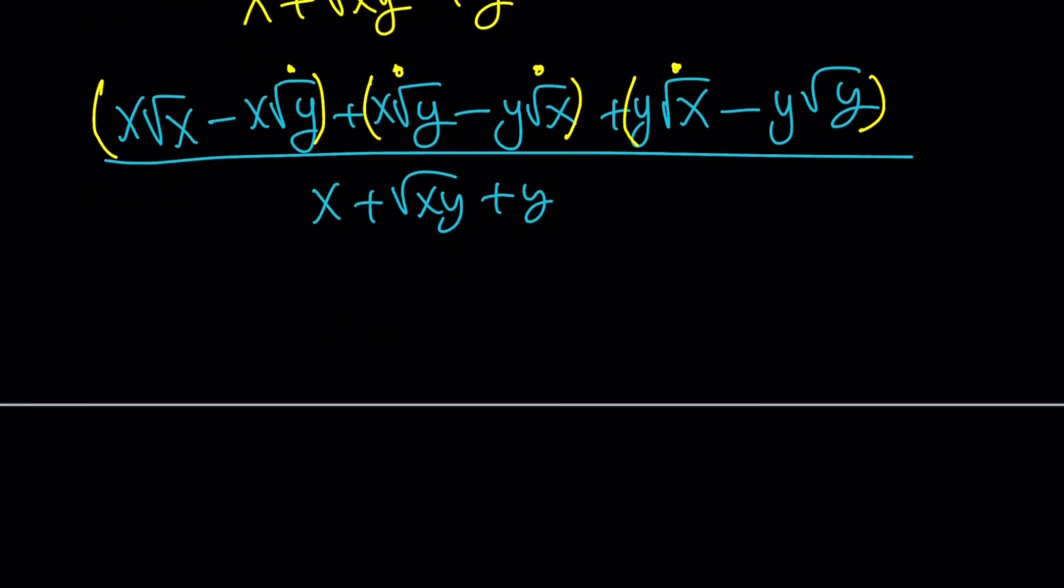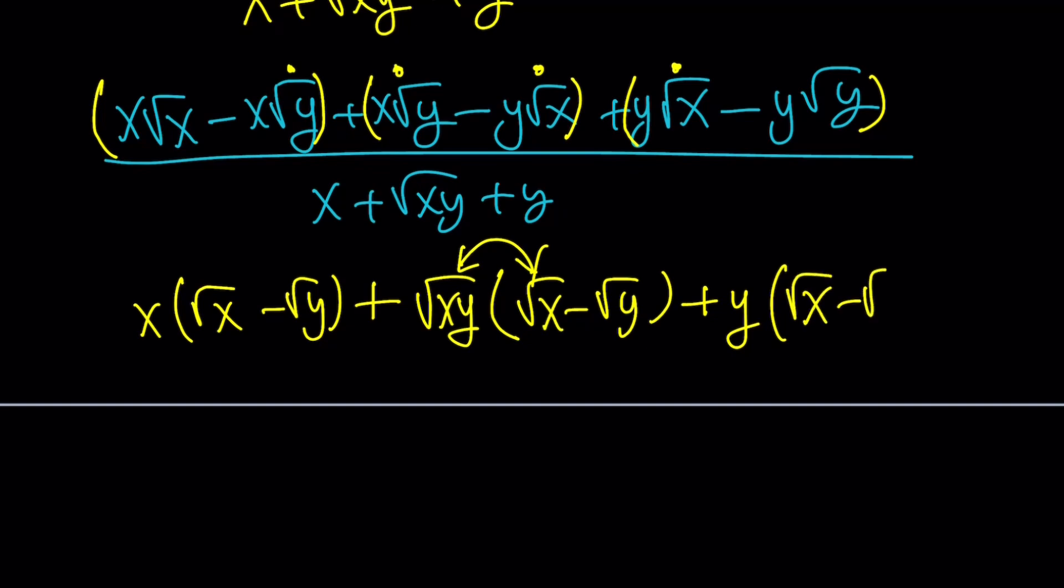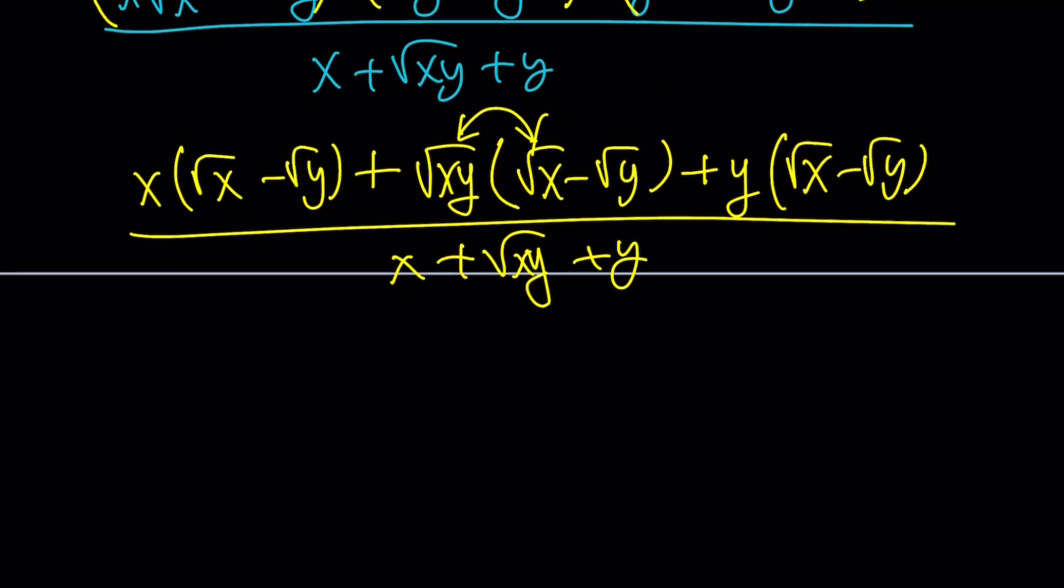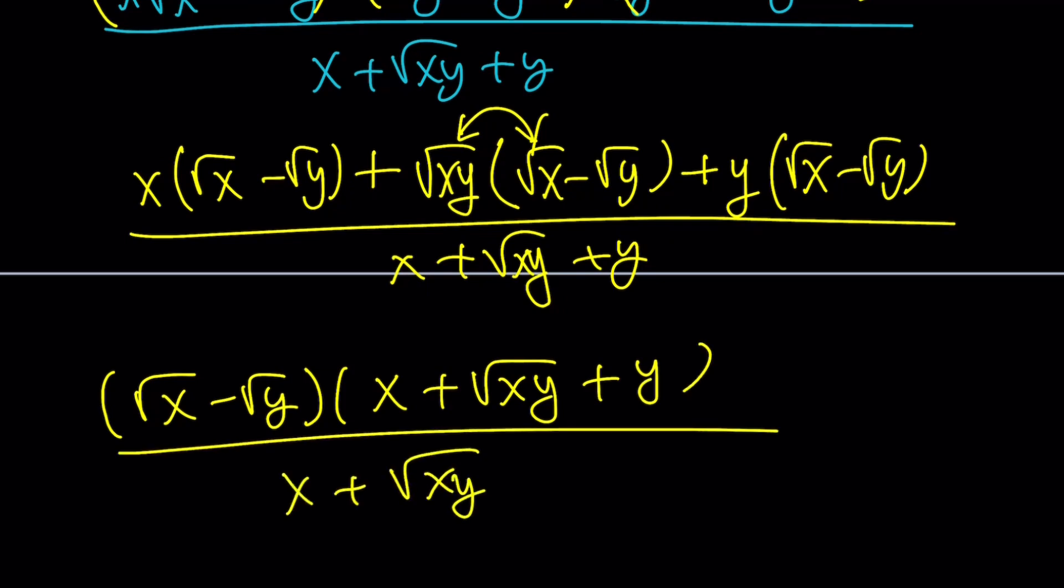I'm going to group like this. If you take out an x, you get root x minus root y. If you take out a square root of xy, you get root x minus root y. If you multiply these two things, square root of x times square root of x becomes x. Similarly, take out y and we get root x minus root y. The whole thing is divided by x plus root xy plus y. Now the numerator has a common factor: root x minus root y. The other factor is x plus square root of xy plus y. Everything cancels out and we end up with the answer: square root of x minus square root of y.